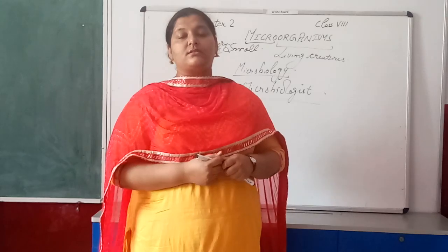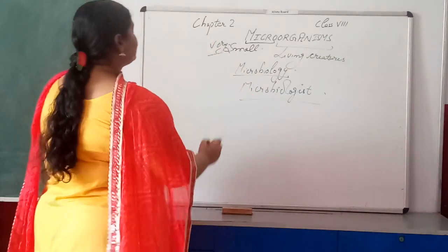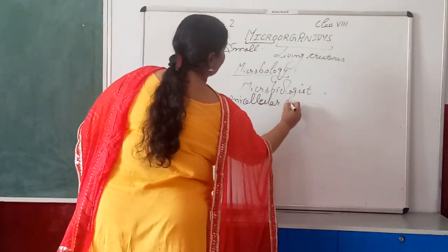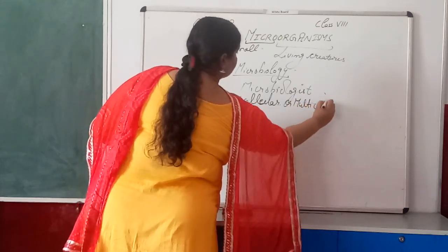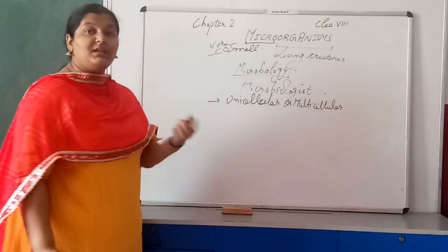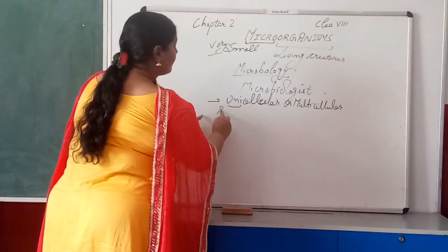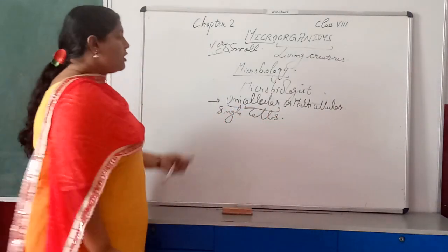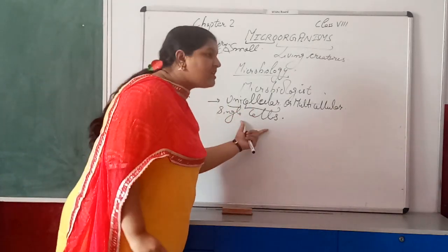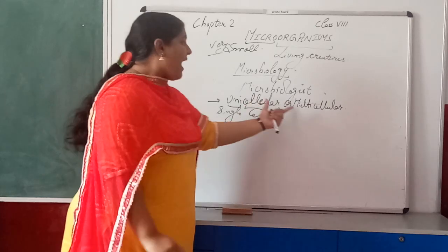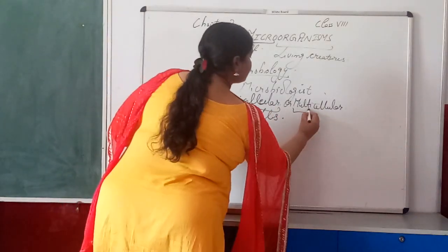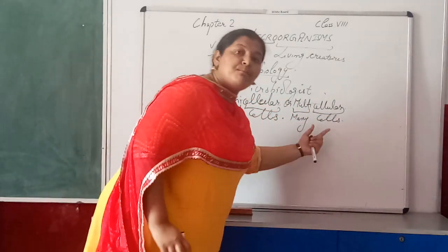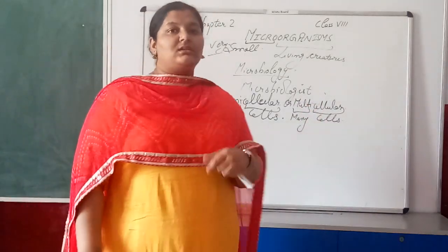What are these general characteristics? One general characteristic is that micro-organisms are either unicellular or multicellular. 'Uni' means single and 'cellular' means made of cells, so a unicellular organism is made up of only a single cell. 'Multi' means many, so a multicellular organism is made up of many cells.